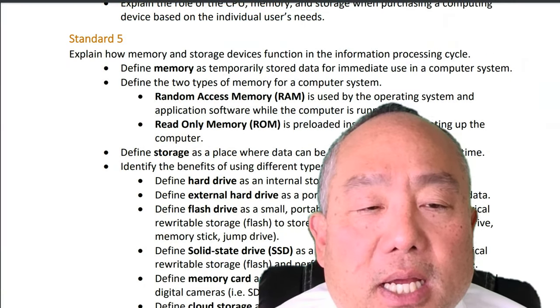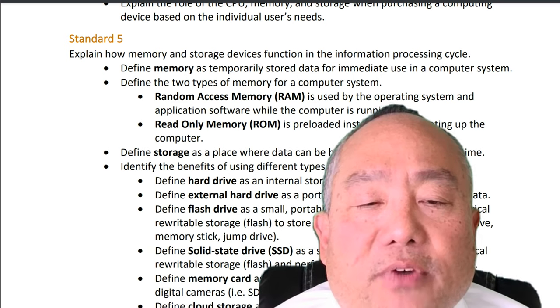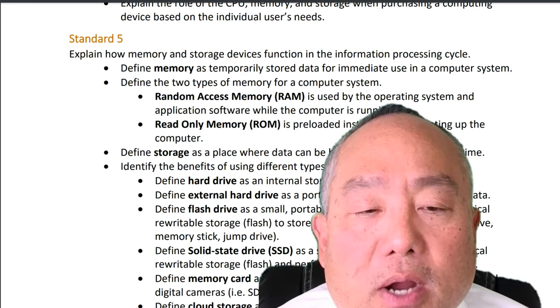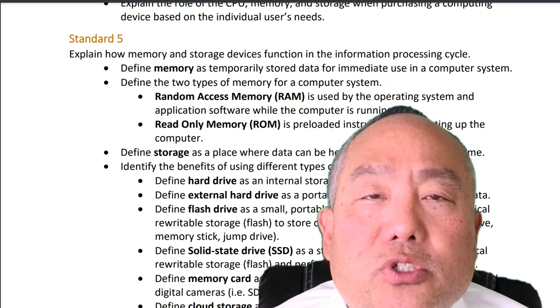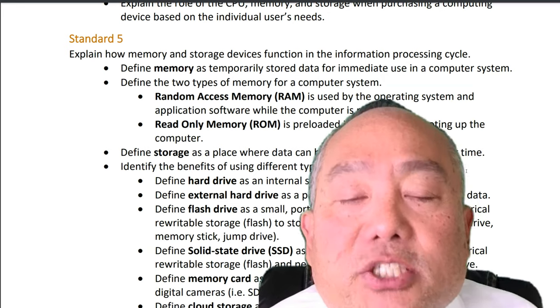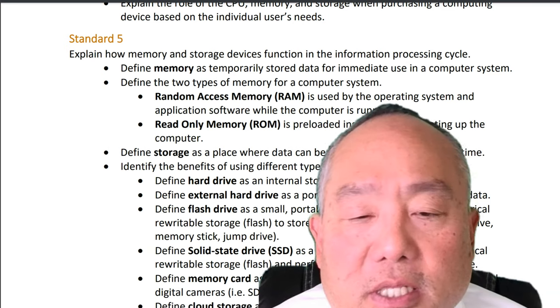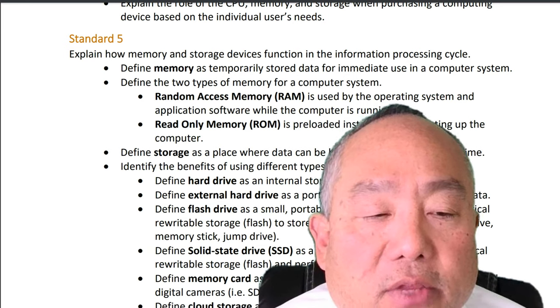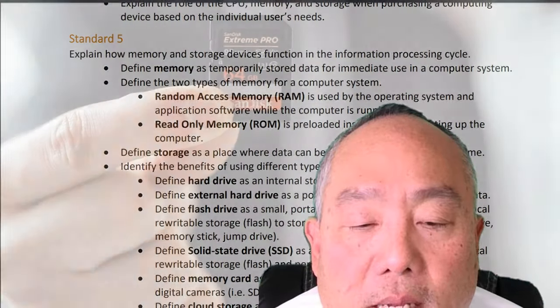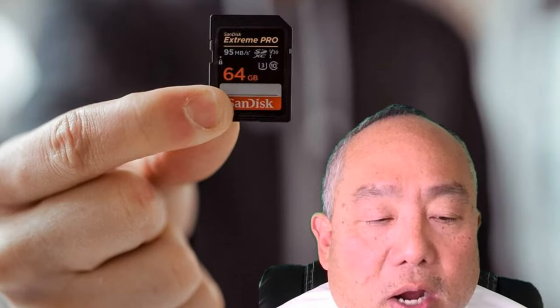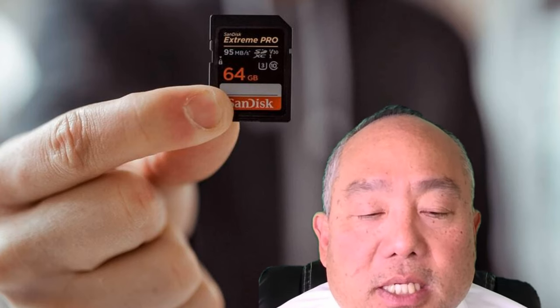Define storage as a place where data can be held and retrieved at a later time. Identify the benefits of using different types of primary storage. Define hard drive as an internal storage device that stores data. Define external hard drive as a portable storage device that stores data. Define flash drive as a small portable storage device that uses electrical rewritable storage to store or transfer data. Define memory card as a small flat flash drive used in mobile devices and digital cameras, such as SD card and micro SD card.